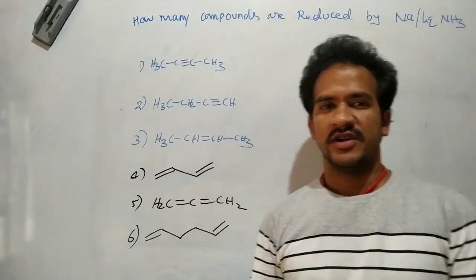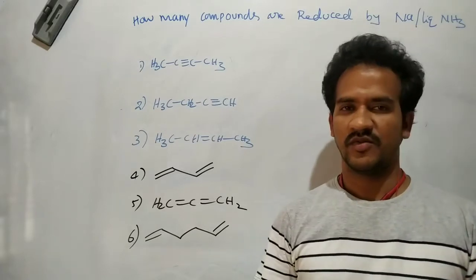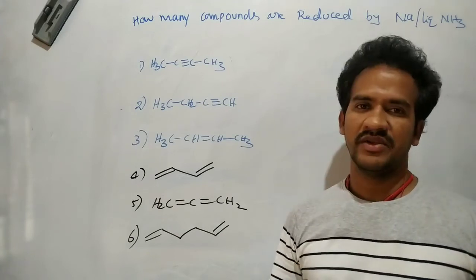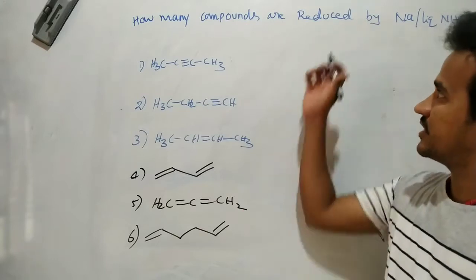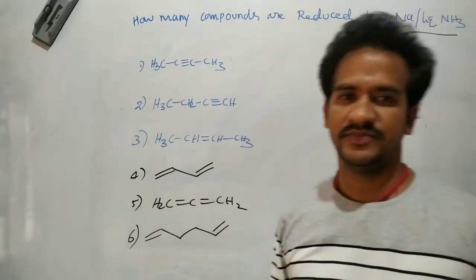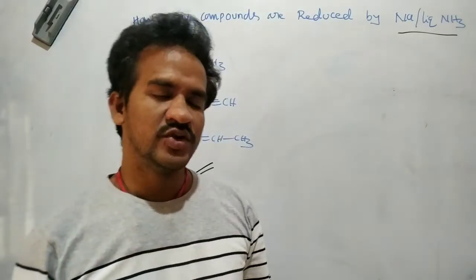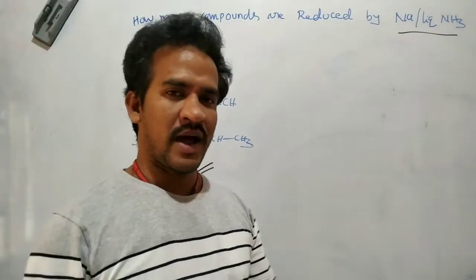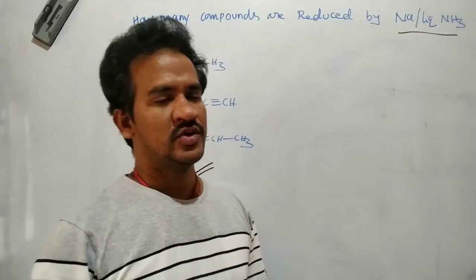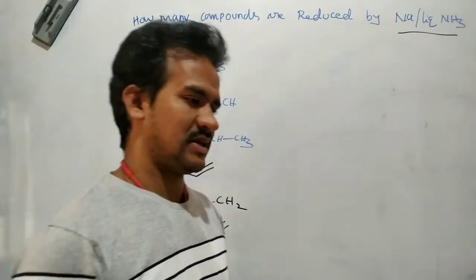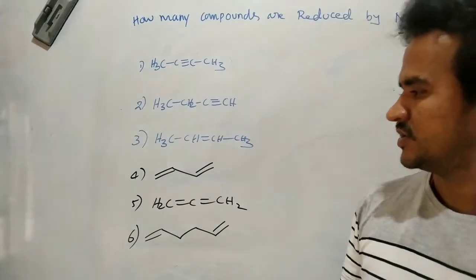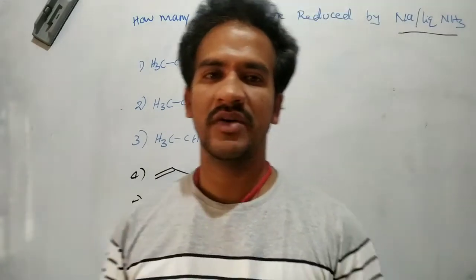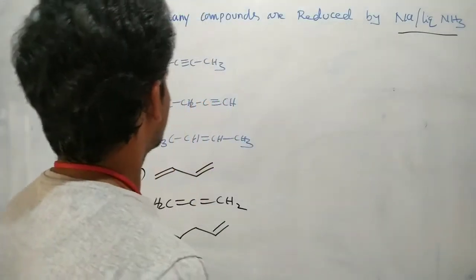Hello students, here we are going to discuss just one question. I think you are very familiar with this reagent — sodium in liquid ammonia. We know that sodium liquid ammonia can reduce alkynes. Based on that concept, let us discuss some exceptional reactions. Six compounds are given: how many are reduced by sodium liquid ammonia?